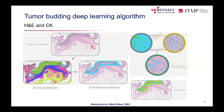The algorithm pipeline involves tissue segmentation, border delineation, nucleus detection across the invasion front, clustering of nuclei into groups of up to four, and automated identification of hot spots for bud counting. While technically elegant, practical implementation in real clinical settings remains a challenge.